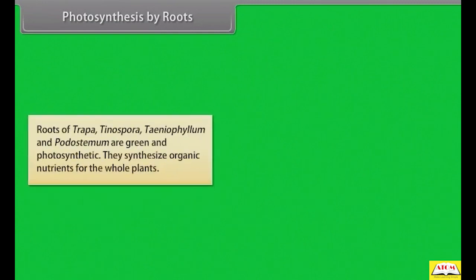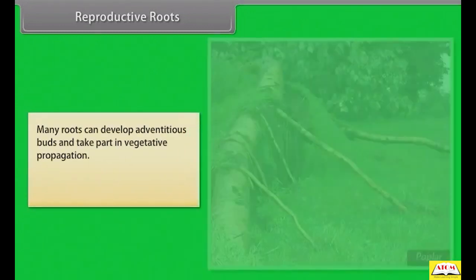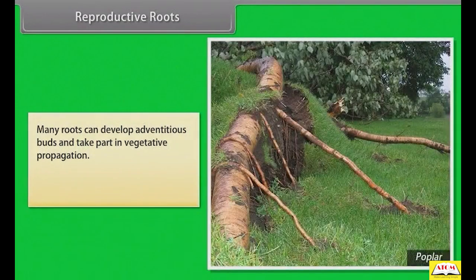Roots of Trapa, Tinospora, Taeniophyllum, and Podostemum are green and photosynthetic — they synthesize organic nutrients for the whole plant. Many roots can develop adventitious buds and take part in vegetative propagation, e.g., Populus, Dalbergia, dahlia, sweet potato.